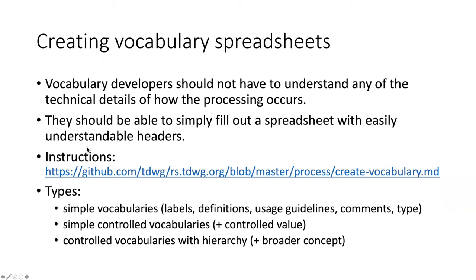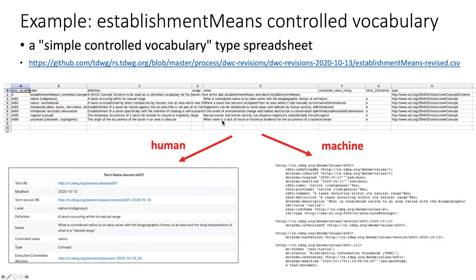This method is predicated on the idea that vocabulary developers should not have to understand all the gory technical details about how the creation of terms is processed. They should simply be able to fill out a spreadsheet that has easily understandable headers. There is a set of directions for how to do this at this URL, and there are also examples of three types of vocabularies that can be developed with the spreadsheets. The establishment means vocabulary, which was a recently adopted addition to Darwin Core, was developed using this system. It used a simple controlled vocabulary type of spreadsheet, so it has a column for the controlled value string.